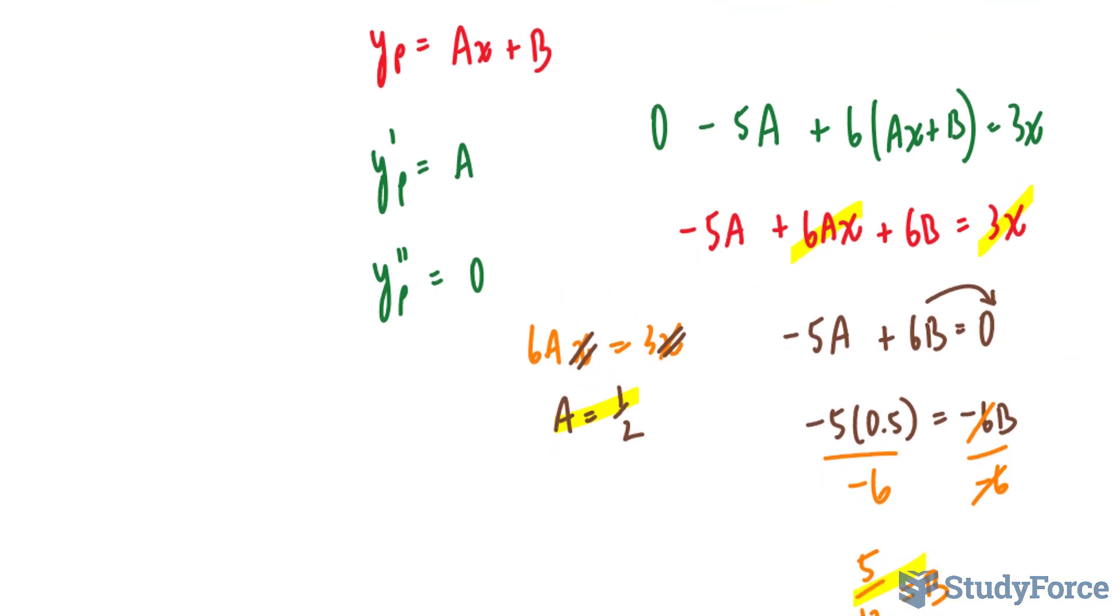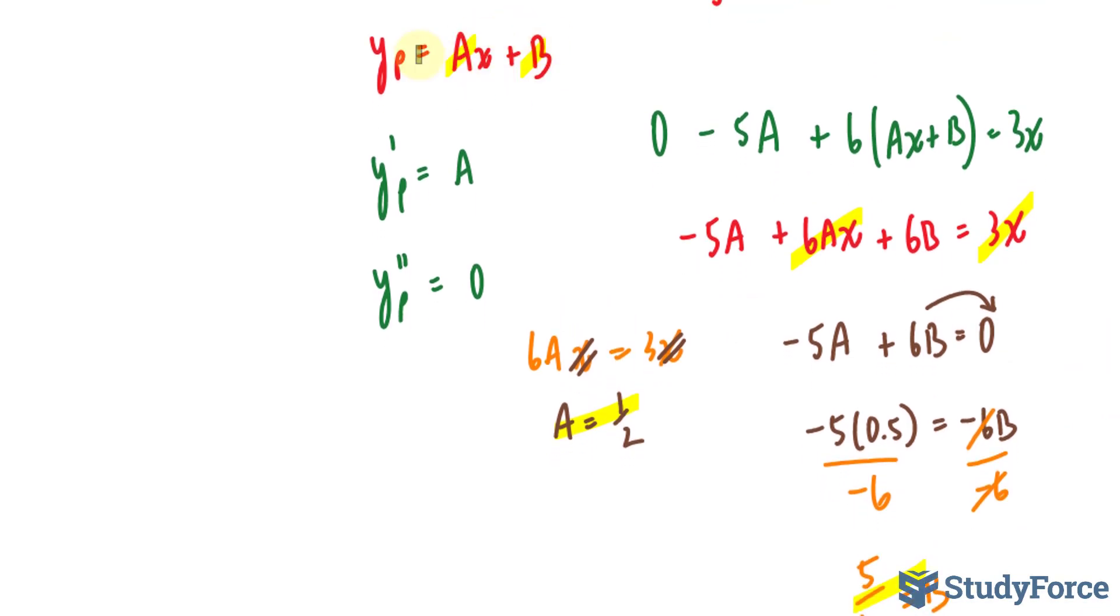I'll substitute these values into here. And for my particular integral, I end up with yp equals half times x plus 5 over 12.